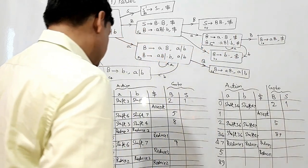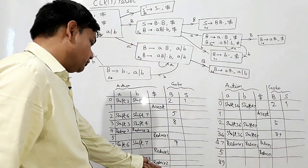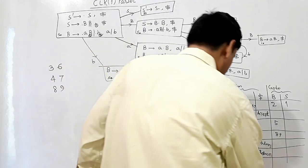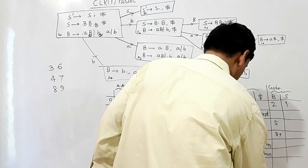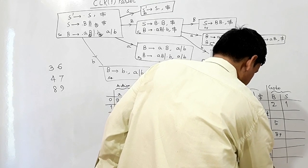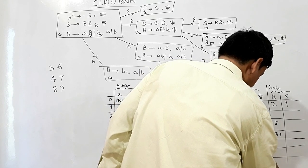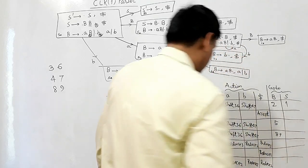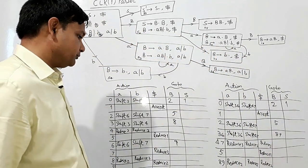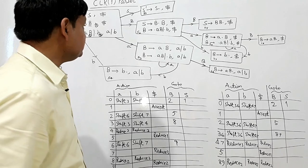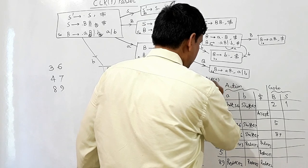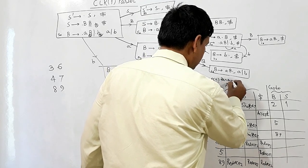In states 8,9, I write reduce 2 at A, B, and dollar — these are all merged, so reduce 2 entries are combined. This completes the LALR(1) parsing table.